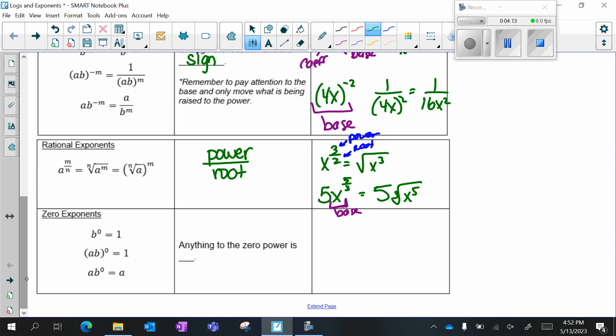Zero exponents, anything to the zero power is 1. So once again, you have to be careful about the base. If I have 2x to the zero, only this part is 1. So this is like 2 times 1, which is 2. Versus if I had something like this, the entire parentheses is the base, so it equals 1. And if I had something like this, it would be 4y squared because this part becomes 1.